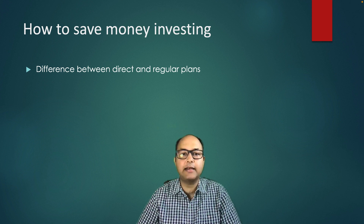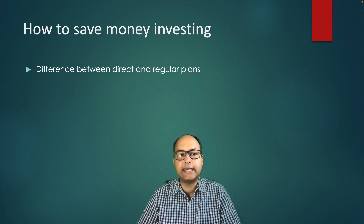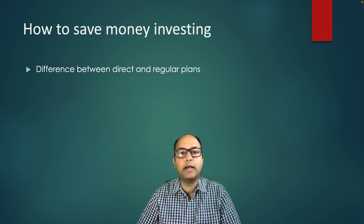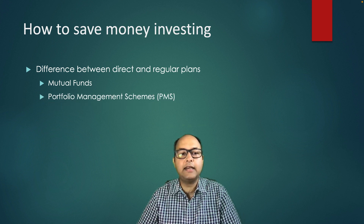A direct plan is when you're directly investing with the company and there is no middle person to facilitate that. However, a regular plan — which I would call a brokerage plan — means there are people involved dealing in these plans. Whenever you see the name 'regular,' that means there is a brokerage involved, in the form of mutual funds and portfolio management schemes.